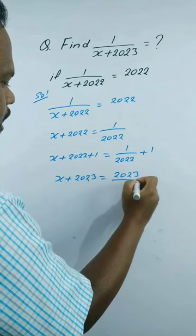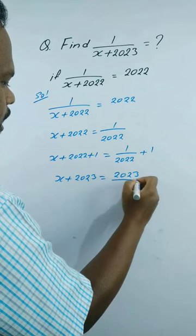Again, the reciprocal of the left hand side will be equal to the reciprocal of the right hand side. So 1 by x plus 2023 is equal to 2022 by 2023. This is our solution.